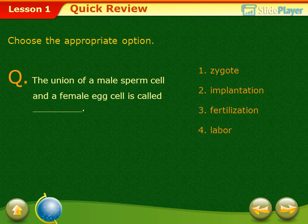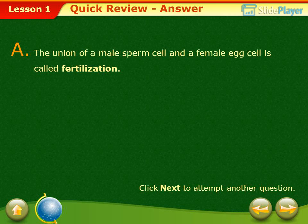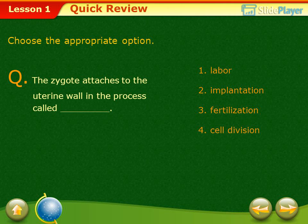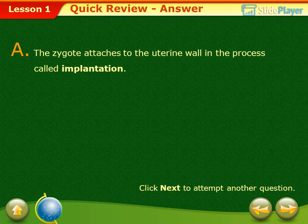Quick review: The union of a male sperm cell and a female egg cell is called fertilization. The zygote attaches to the uterine wall in the process called implantation.